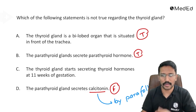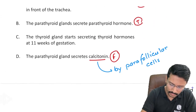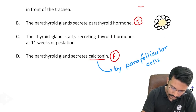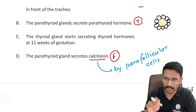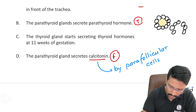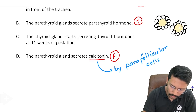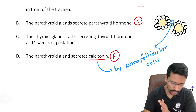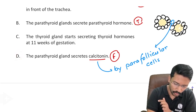Looking at the basic architecture of the thyroid gland: you have thyroid follicular cells arranged to form a thyroid follicle, within which there is colloid at the center. The surrounding cells are the thyroid follicular cells. Between two such follicles, you have the parafollicular cells — also called C cells — which secrete calcitonin. So option D is a clear false statement.